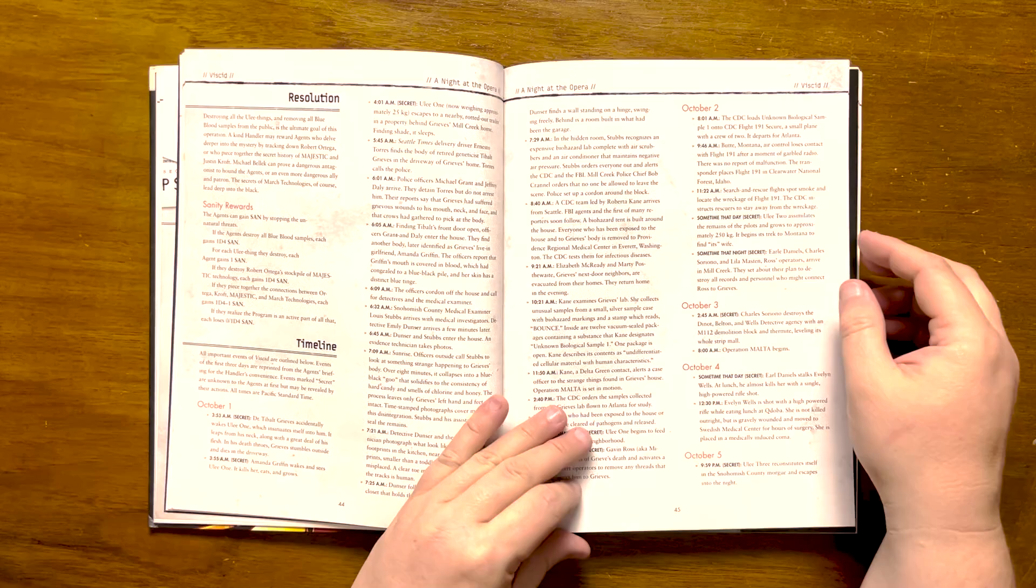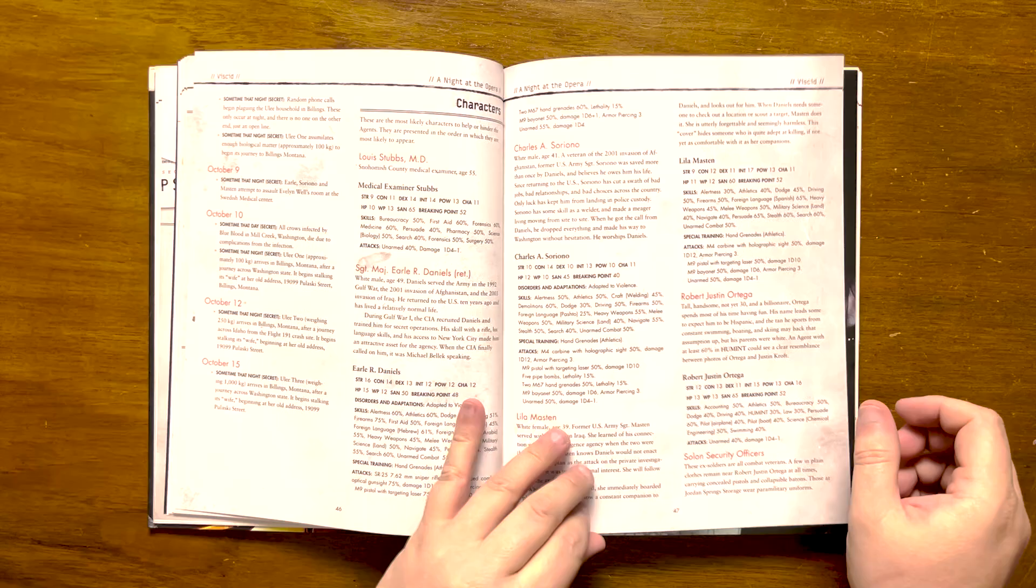The final section gives us rewards for a resolution and a detailed timeline of events for the handler to track. It then stats out the main characters of the piece, including stats for the three Uli things, that are described in gruesome detail.